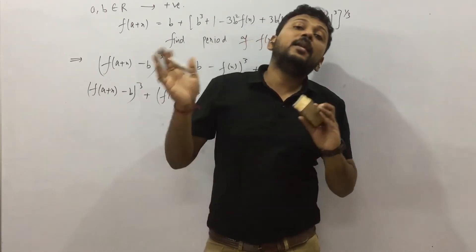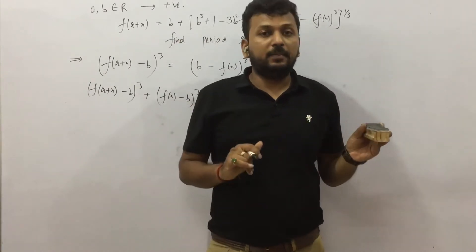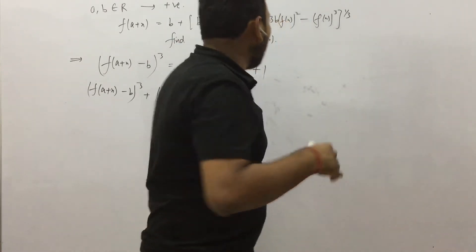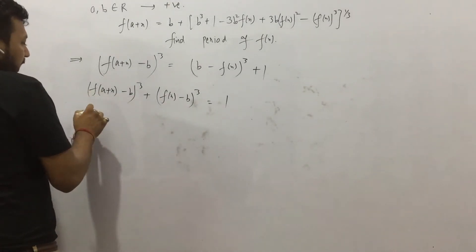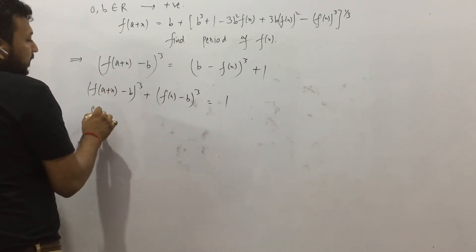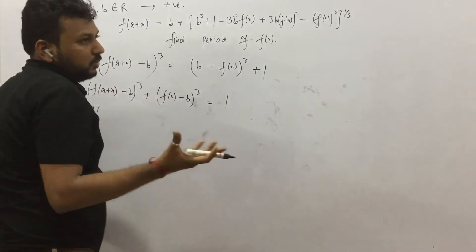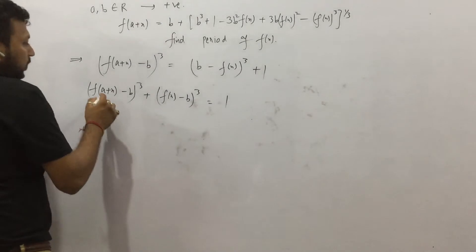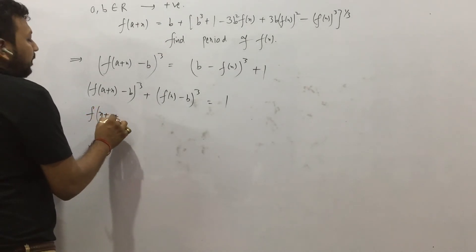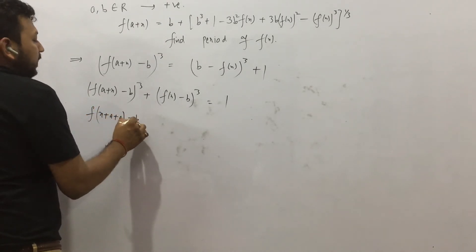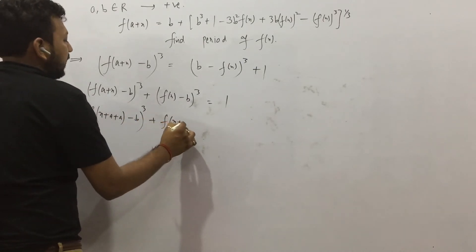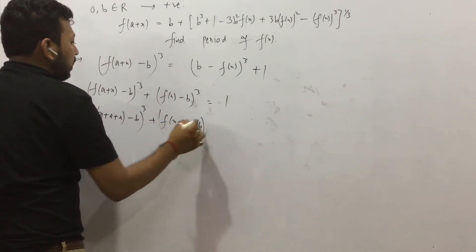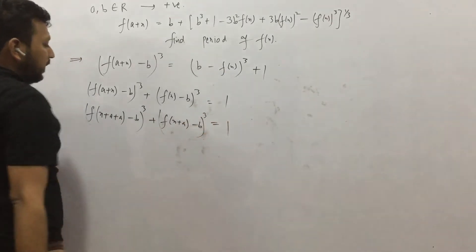If you have studied definite integrals, then the dummy variable concept is used. See, x + a we can consider as y, and y I can again write as x because y was a dummy variable. The variable's name is not important. So I can write x + a. For x sending to x + a, it's like shifting the origin. So it will become (x + a + a - b)³ + (f(x+a) - b)³ equals 1.